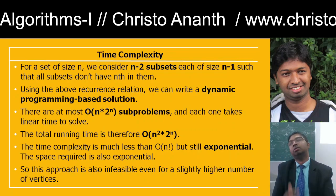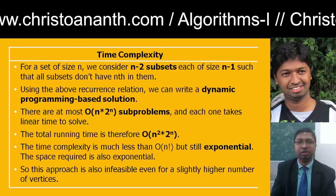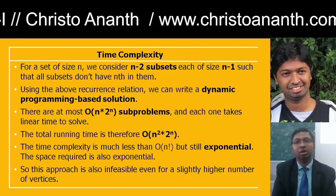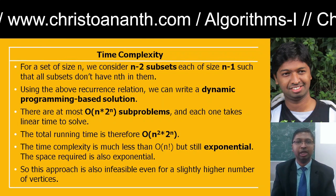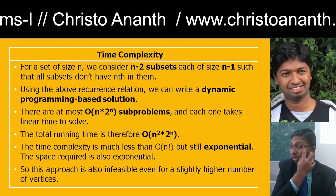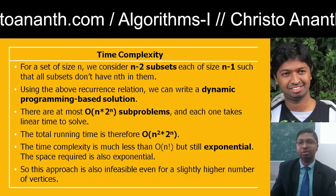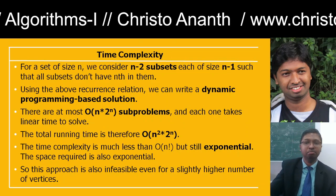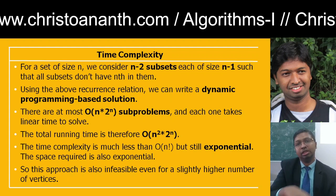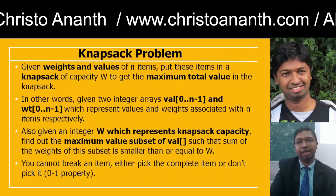Regarding time complexity: for sets of size n, we consider n−2 subsets each of size n−1. Since we are calculating over n * 2^n states, the time complexity is O(n * 2^n). This is better than O(n!), but is still exponential. The space complexity is also exponential. Therefore, for a higher number of vertices, the Traveling Salesman Problem using this dynamic programming approach is not feasible.